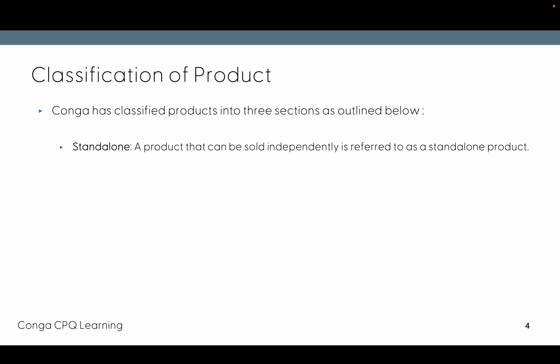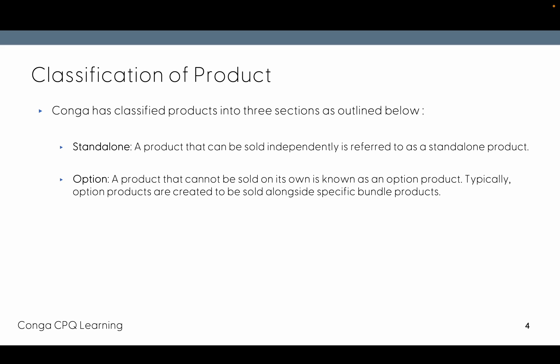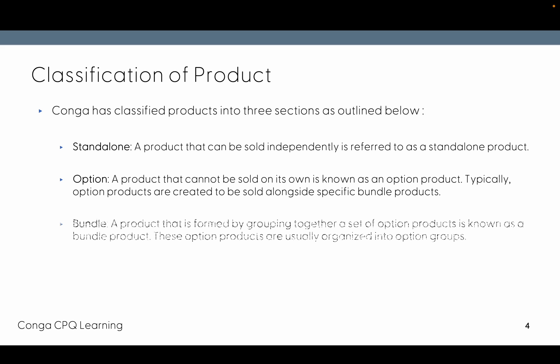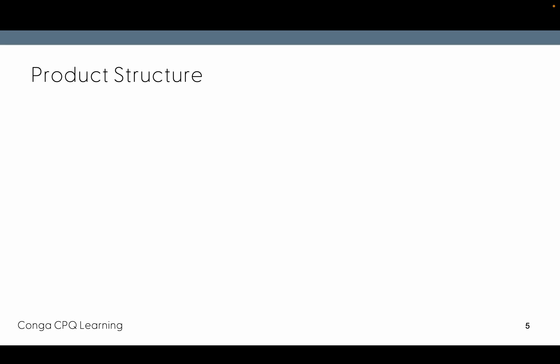Classification of products: Conga has classified products into three sections. First, standalone — a product that can be sold independently. Second, option — a product that cannot be sold on its own and is created to be sold alongside a specific bundle. Third, bundle — a product formed by grouping together a set of option products.